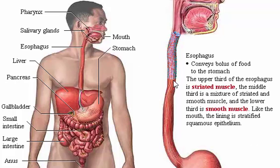The upper third of the esophagus is striated muscle, the middle third is a mixture of striated and smooth muscle, and the lower third is smooth muscle. Like the mouth and pharynx, the lining is stratified squamous epithelium.